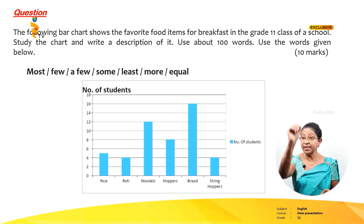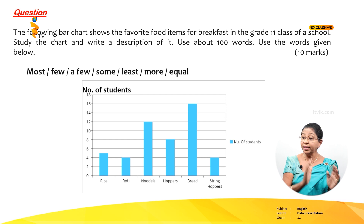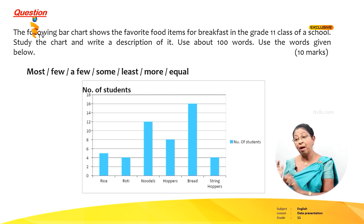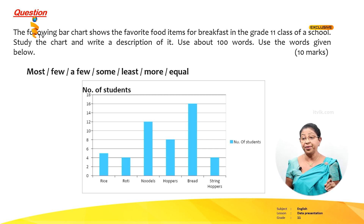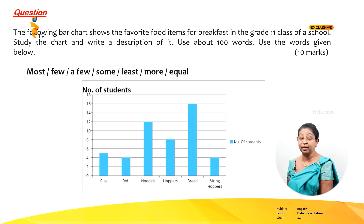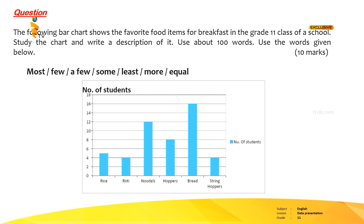Now look at this bar graph. The vertical line is the y-axis and it represents the number of children. The horizontal line is the x-axis and it represents their favorite food items for breakfast. They are rice, roti, noodles, hoppers, bread, and string hoppers.